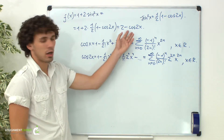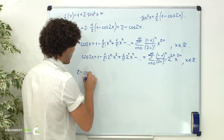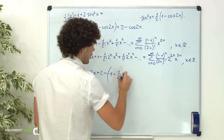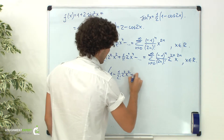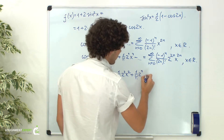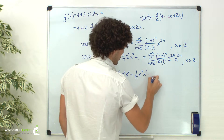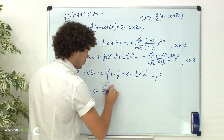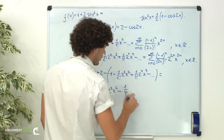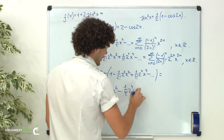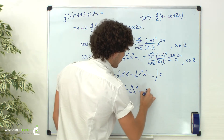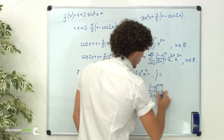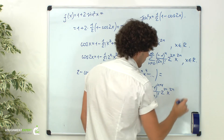Finally, we can find the Maclaurin expansion for our function. 2 minus cosine of 2x equals 2 minus the expression: 1 minus 1 over 2 factorial times 2 squared times x squared plus 1 over 4 factorial times 2 raised to the 4th power times x raised to the 4th power, and so on. This equals 1 plus 1 over 2 factorial times 2 squared times x squared minus 1 over 4 factorial times 2 raised to the 4th power times x raised to the 4th power, and so on, plus the general term: negative 1 raised to the power of n plus 1 over the factorial of 2n times 2 raised to the power of 2n times x raised to the power of 2n, and so on.